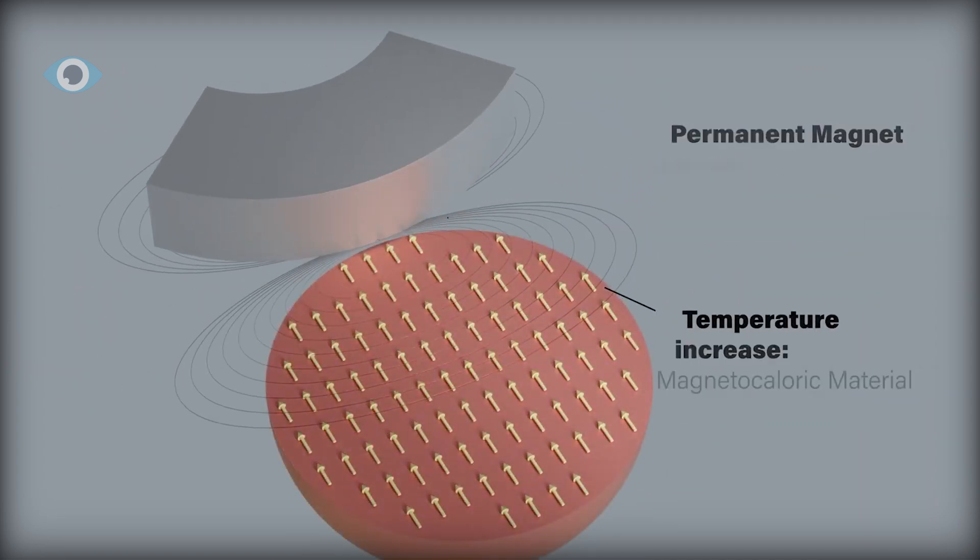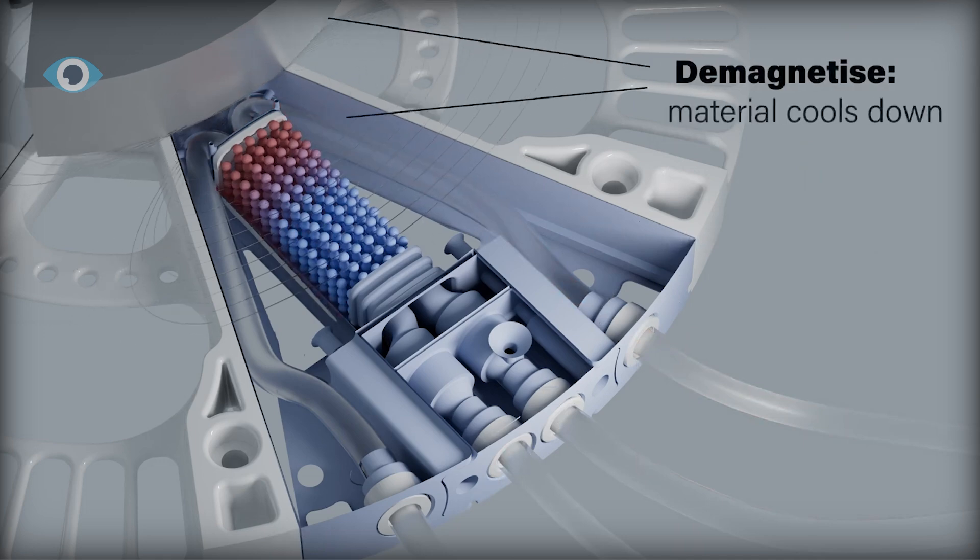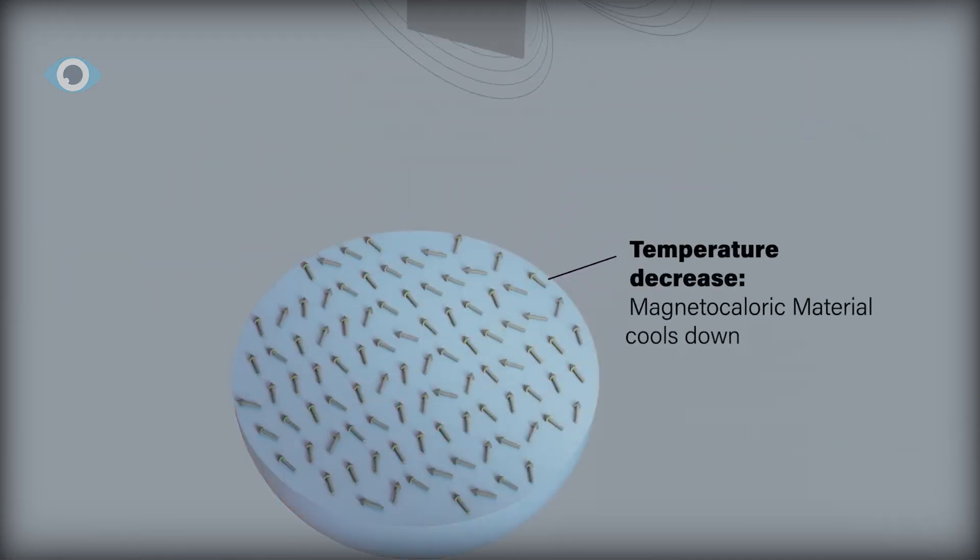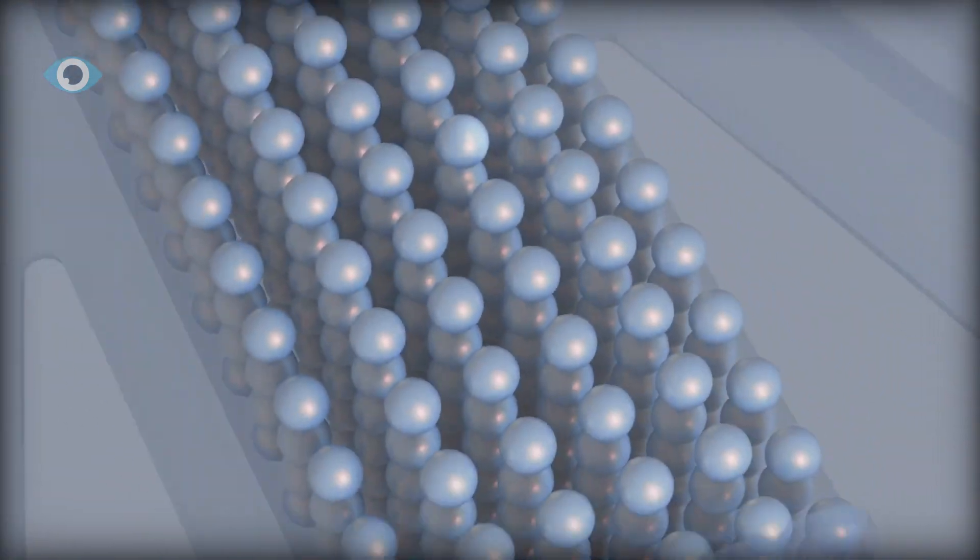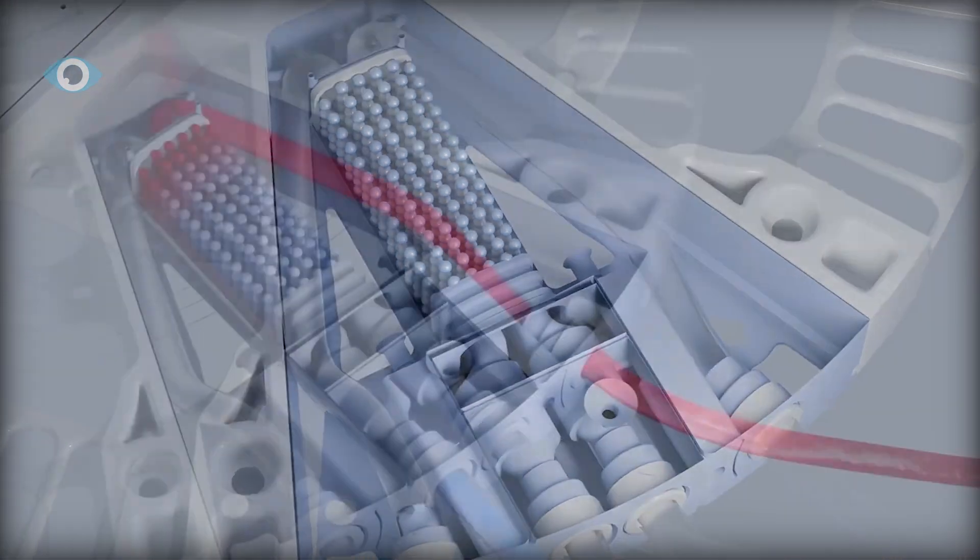When the magnetic field moves on, the particles cool, and the cycle repeats, transferring heat without compressors, without refrigerants, and with fewer moving parts.